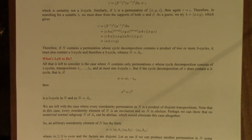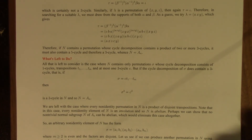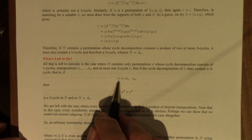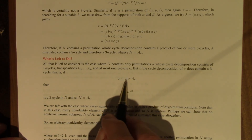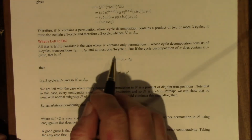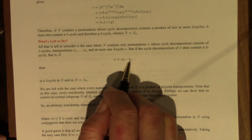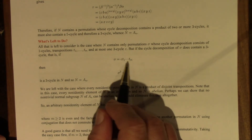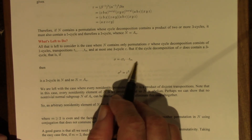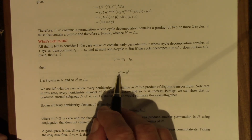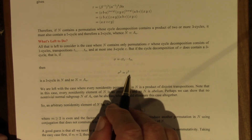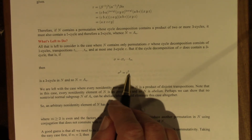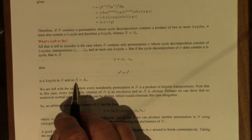We've dispatched the case where the cycle decomposition contains a cycle of length 4 or more, or two 3-cycles. What's left? The case where N contains only permutations whose cycle decomposition consists of 1-cycles, transpositions, and at most one 3-cycle. But if there is a 3-cycle, we can write sigma as C times T_1 through T_m, where C is the 3-cycle and the T's are transpositions. If we square it — remembering transpositions are involutions and everything commutes in the cycle decomposition — then sigma squared equals C squared. And C squared is a 3-cycle if C is a 3-cycle. So we've got a 3-cycle, and N equals A_n.